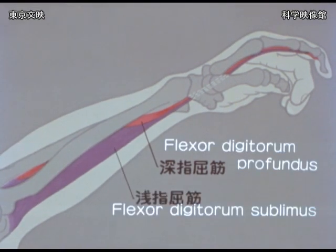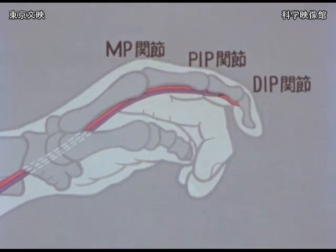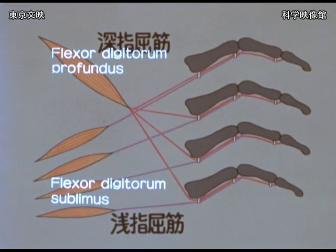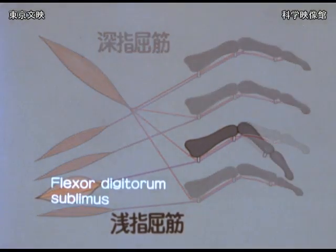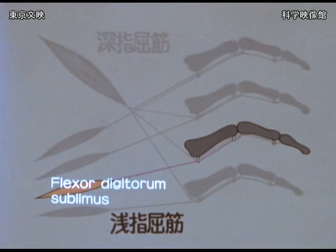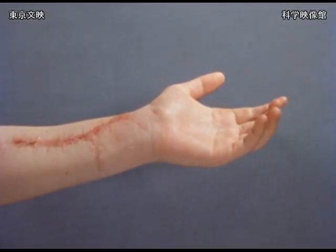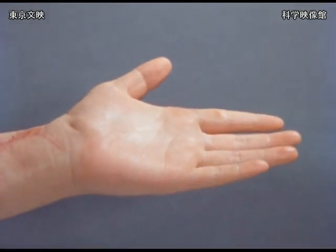The fingers are bent by the flexor digitorum superficialis and flexor digitorum profundus muscles. The superficialis ends at the middle phalanx and the profundus at the distal phalanx, so that a finger can be flexed by the profundus alone. This patient has a division of a flexor superficialis tendon. The fingers can be flexed, so that the division of the superficialis tendon can be easily overlooked.